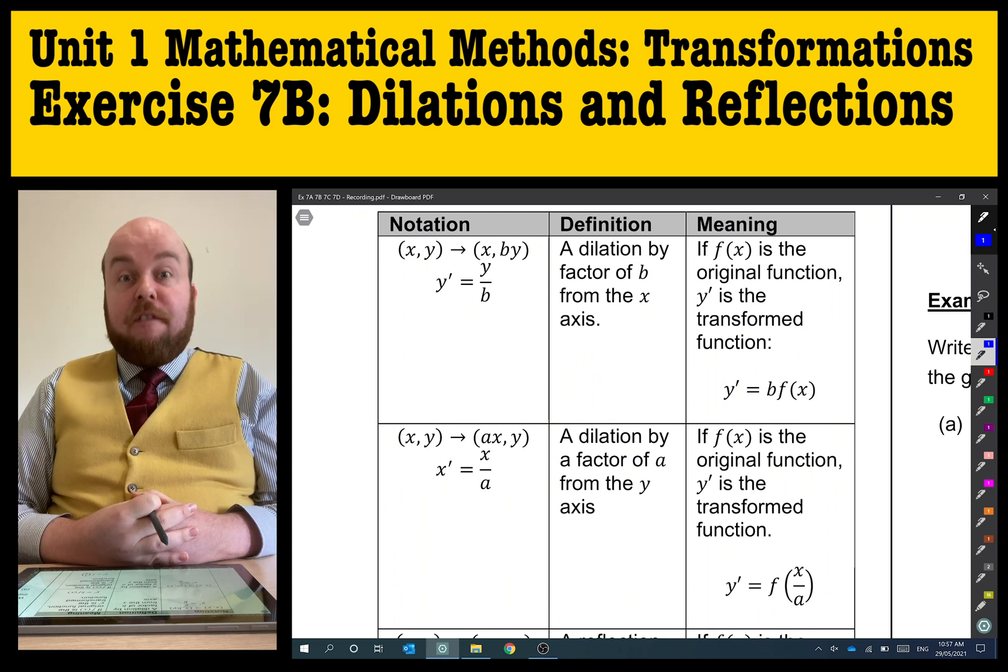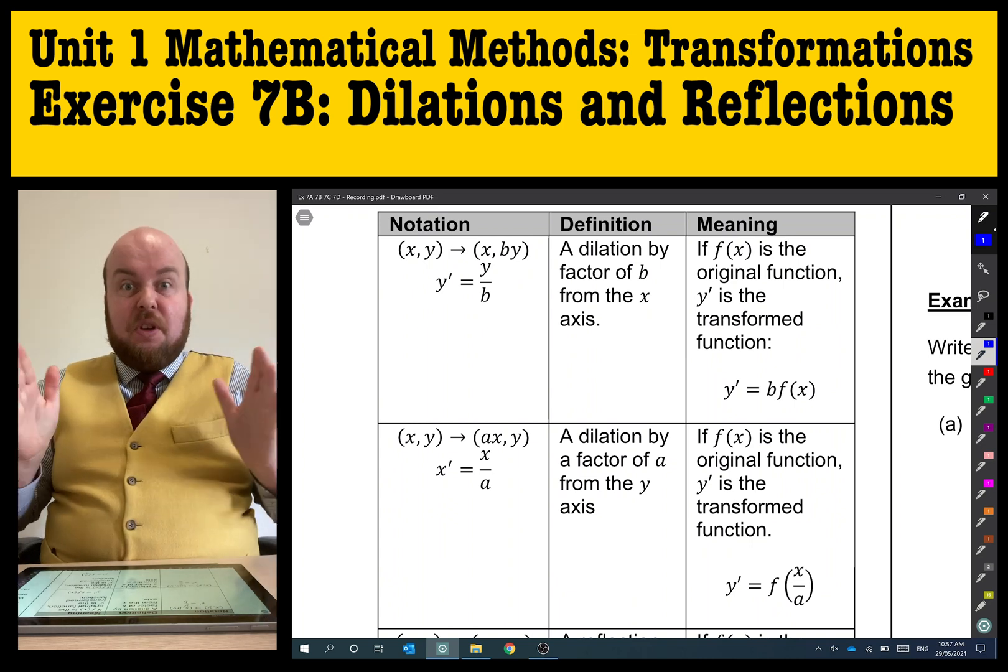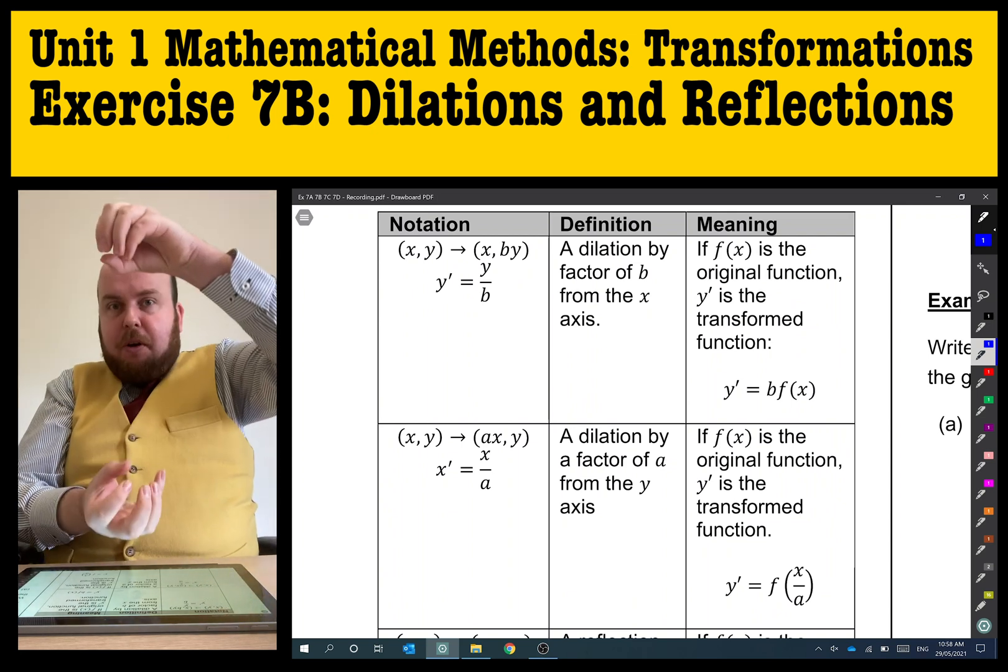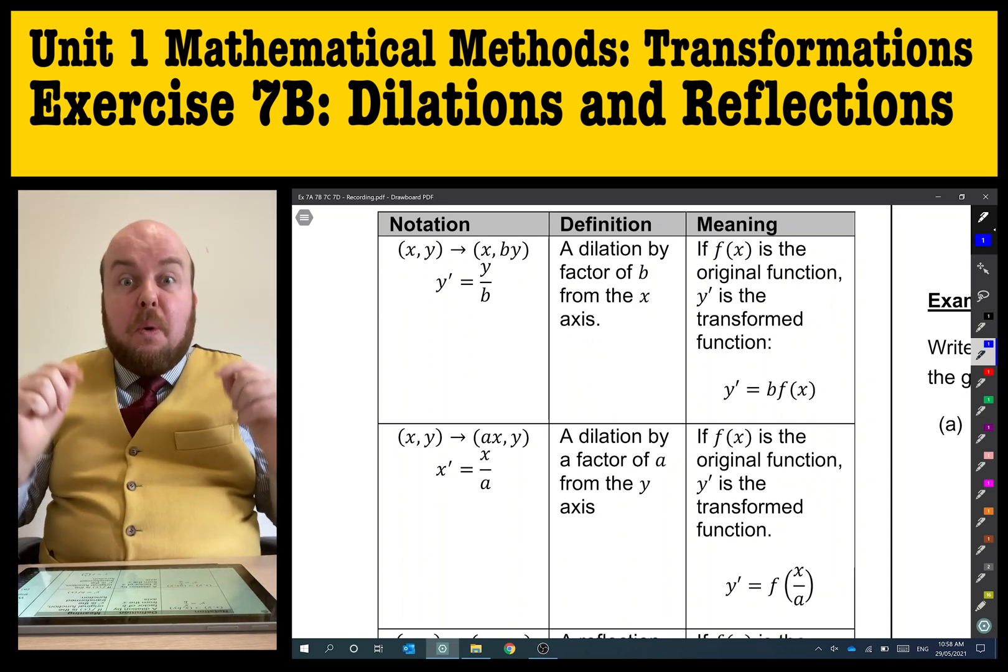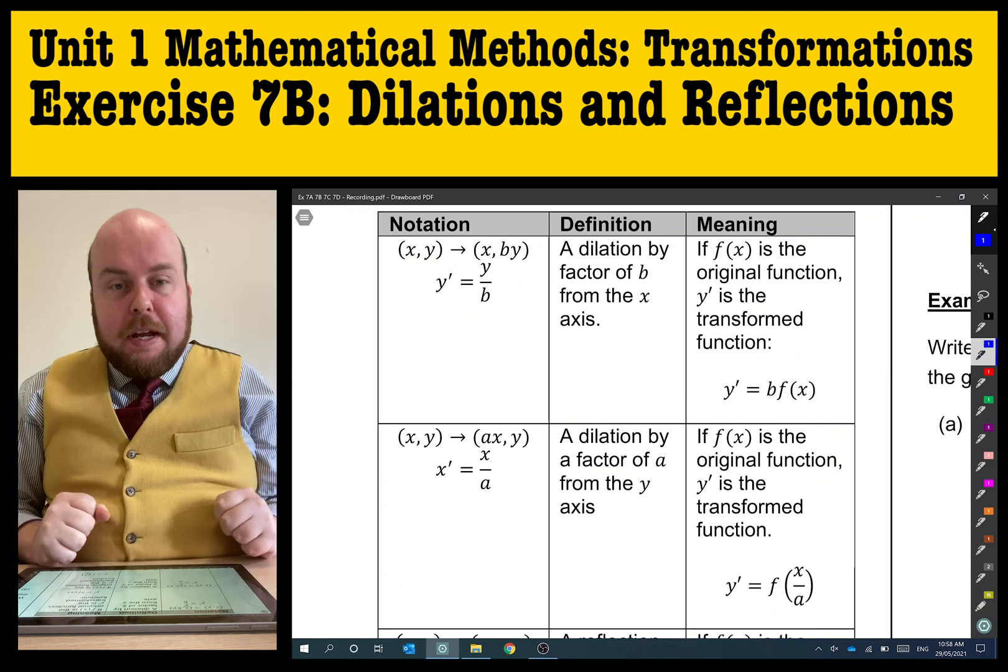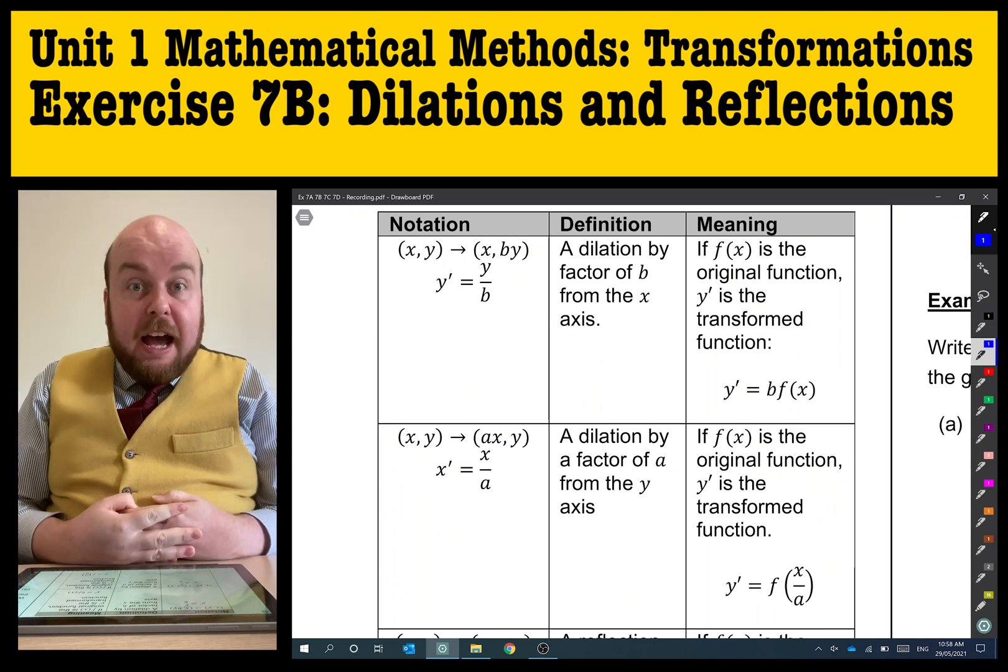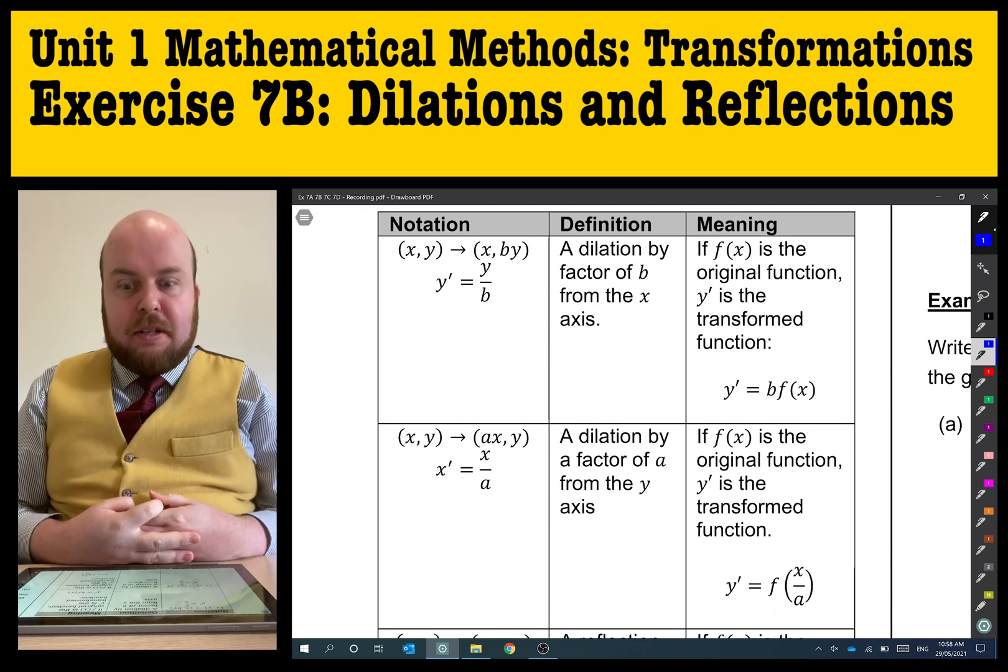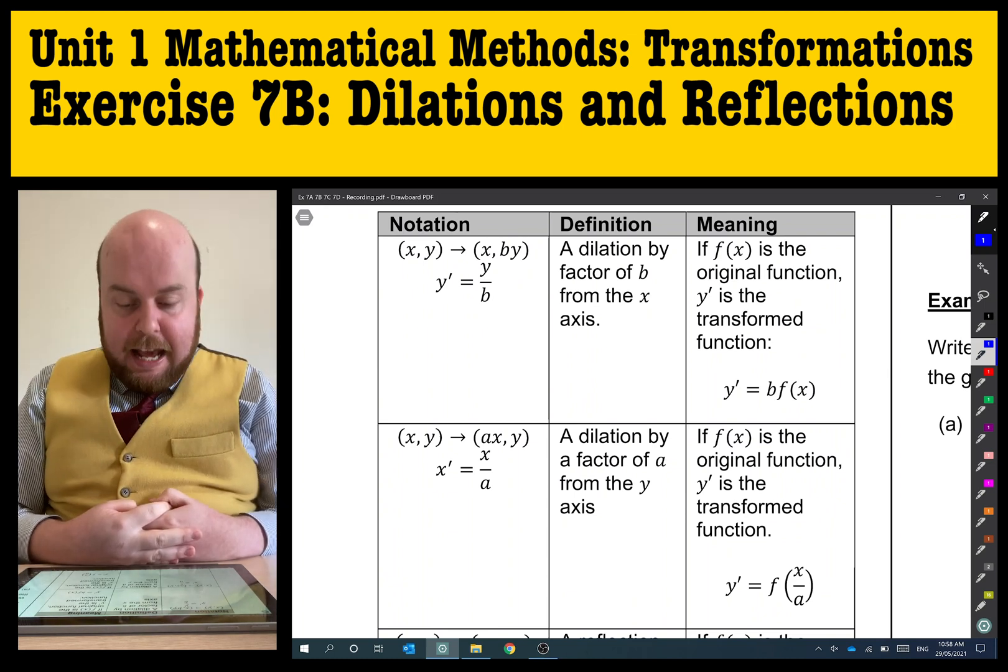The first one is a dilation from the x-axis. If you can imagine we've got our Cartesian plane, the x-axis is the horizontal graph. So if I'm dilating from the x-axis, which of the values are going to get affected? Well, that's all the y's. So all the y values will get affected from a dilation from the x-axis. When we do our notation, x,y arrow x,by, we put whatever factor we're dilating from next to the y's. For example, the notation there is suggesting it's a dilation by factor of b from the x-axis.